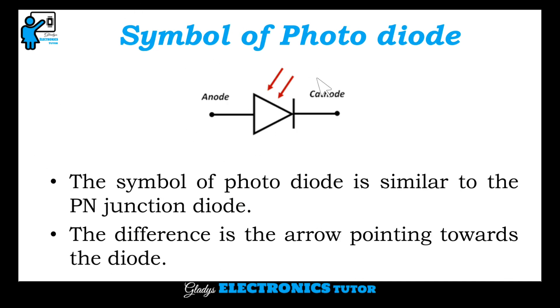This is the symbol of photodiode. The symbol of photodiode is similar to the P-N junction diode. The difference is the arrow pointing towards the diode.